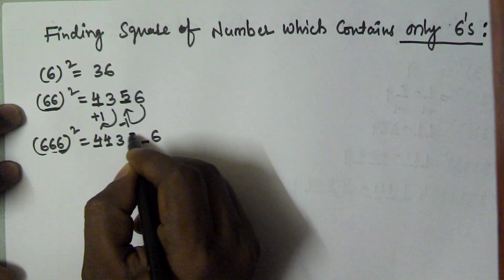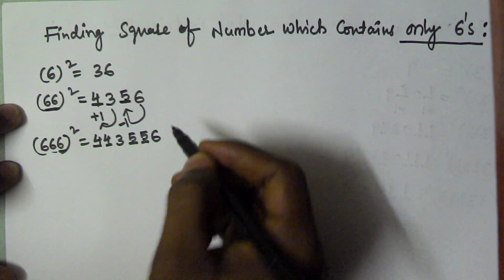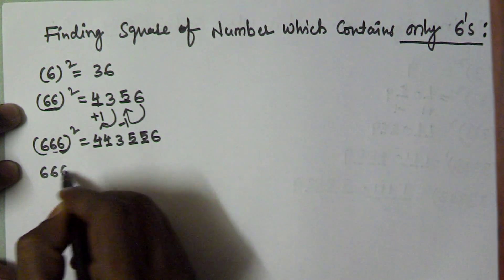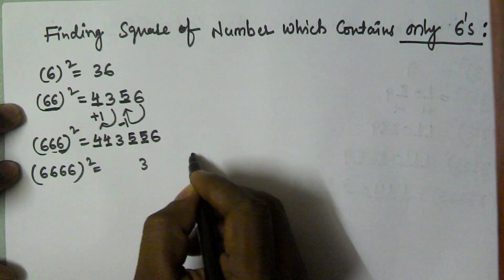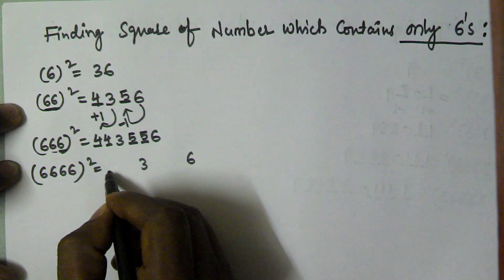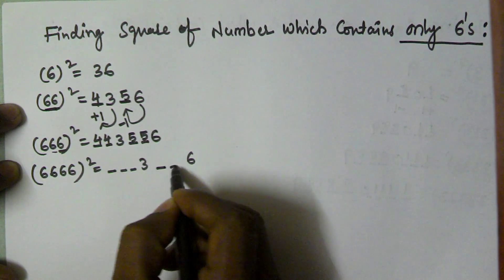The same manner, 6666 square is equal to, so 36 we have 4 digits so 3 pluses here. Plus 1, 3 plus 1 is 4 4 4, here 5 5 5.